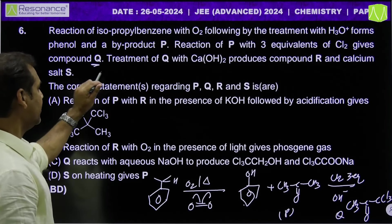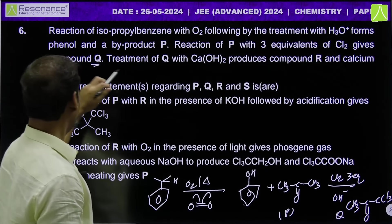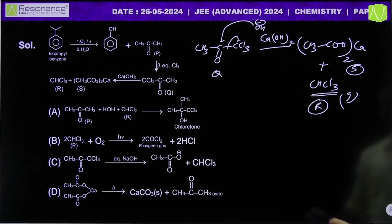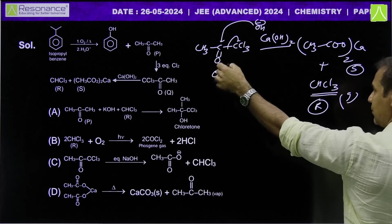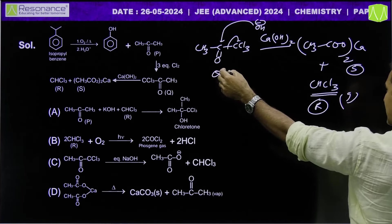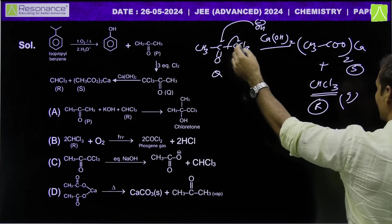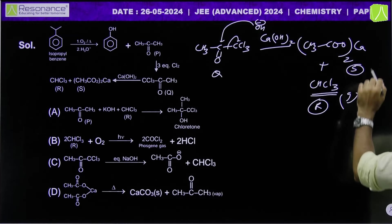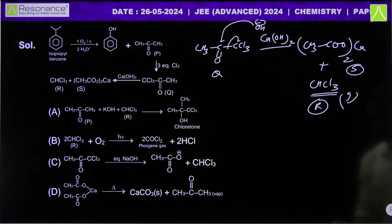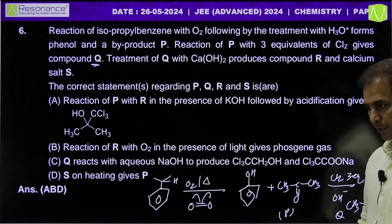Treatment of Q with calcium hydroxide produces compound R and calcium salt S. Q (trichloroacetone) reacts with OH- via an SN2-type mechanism: calcium acetate forms as salt S, and chloroform (R) is the gas produced.